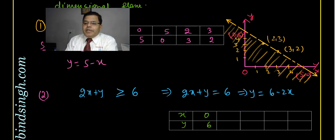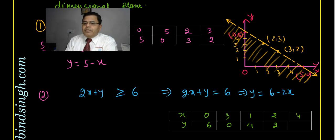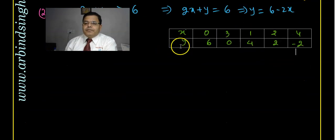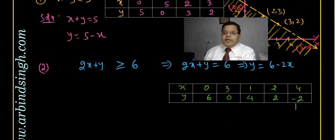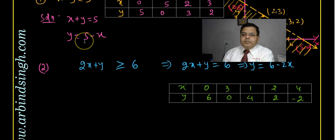More values can be added arbitrarily. If x equal to one, y equal to four; if x equal to two, y equal to two; if x equal to four, y is negative two. The basic thing is how to plot the graph.